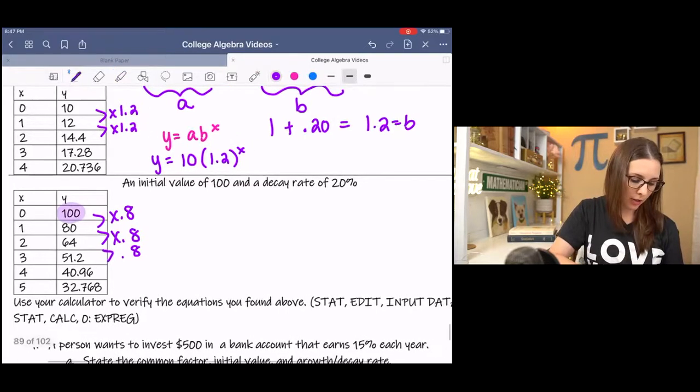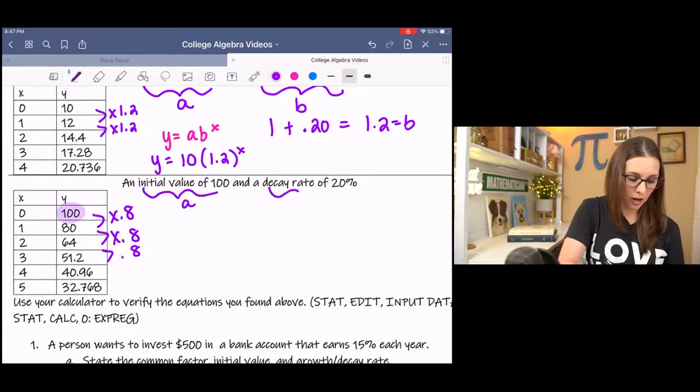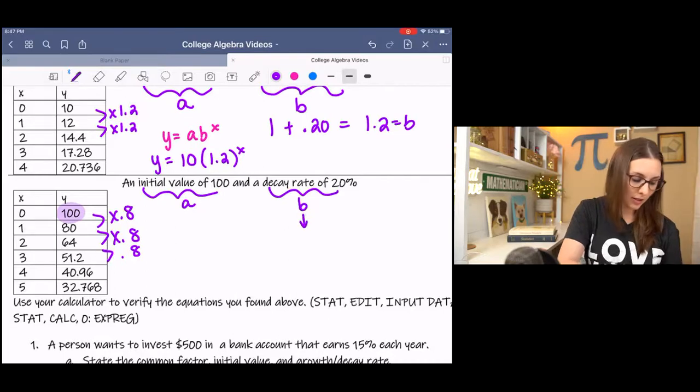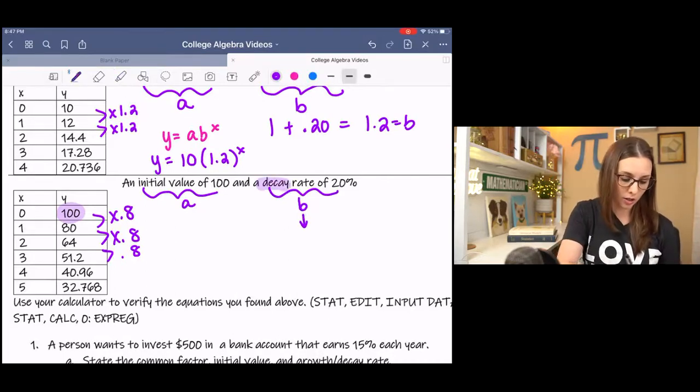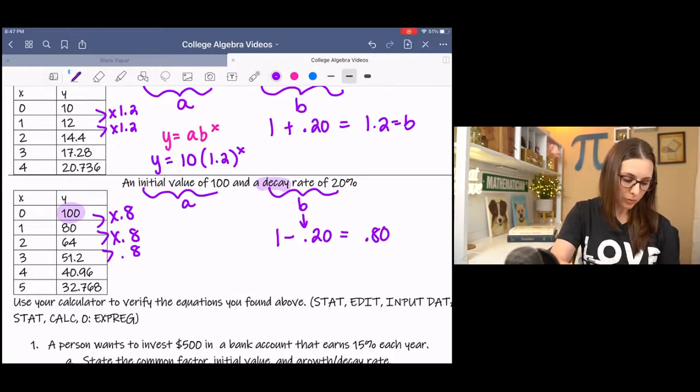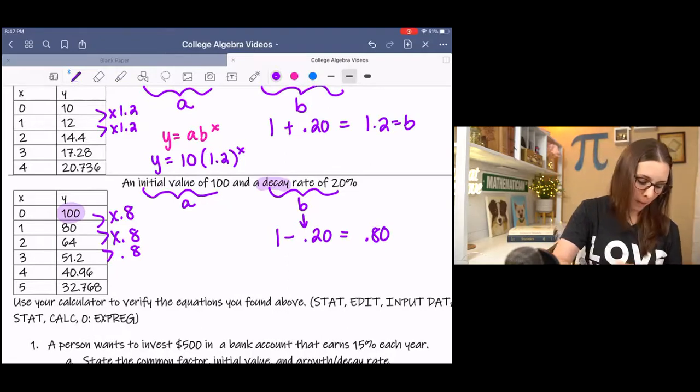And then from the information given, it says that the initial value is 100, and the decay rate is 20%. Since it's decay, that's below 1, which is 0.80. 20% decay is a 0.8 change factor. And that's confirmed from our table of values.